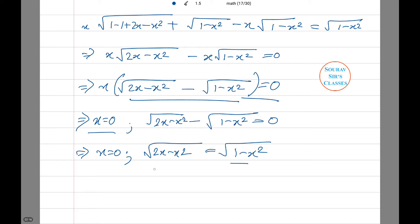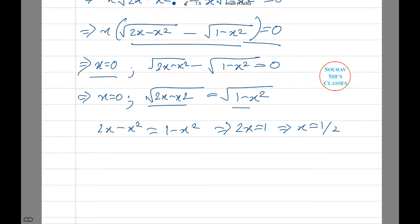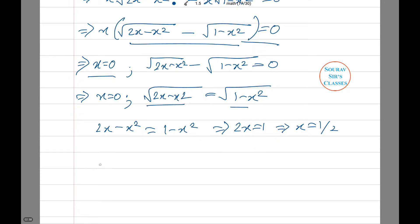Now squaring both sides of this equation, we find 2x minus x squared equals 1 minus x squared, or 2x equals 1, or x equals one-half. Thus finally, we find the values of x as x equals 0 and x equals one-half.